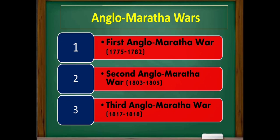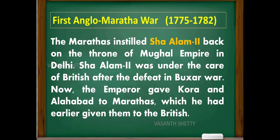The First Anglo-Maratha War was fought between 1775 to 1782. The Marathas installed Shah Alam II back on the throne of the Mughal Empire in Delhi. Shah Alam II had been under the care of the British after their defeat in the Battle of Buxar. The emperor then gave Kora and Allahabad to the Marathas, which he had earlier given to the British.